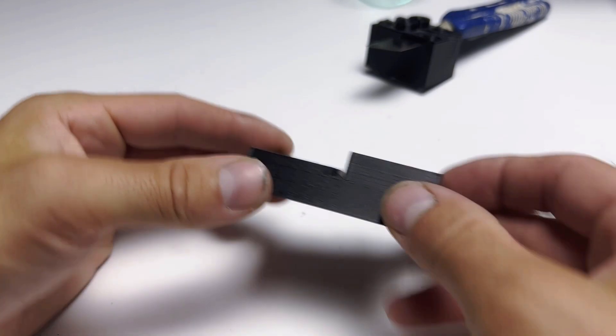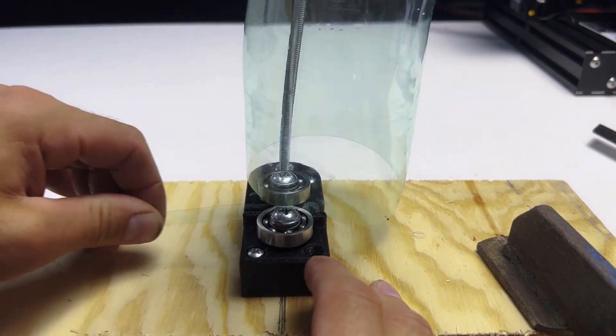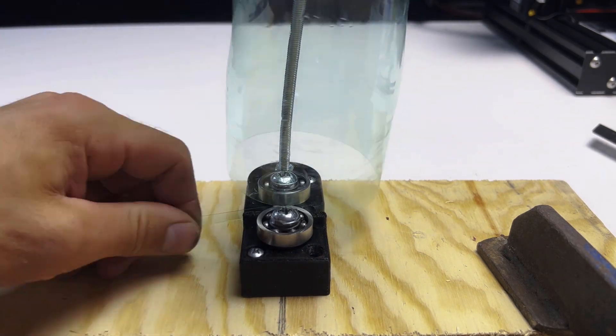So, I decided to try the second type, a bearing cutter. The function of the bearing cutter is simple: it requires only sharpening the bearing.